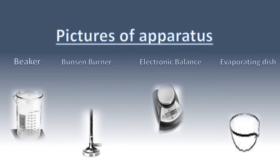Now we are going to look at pictures of the apparatus we just covered. The first one is the Beaker — you can see the picture representing it. Then we have the Bunsen burner. Then we have the electronic balance, which looks like a balance. Then we have the evaporating dish, which definitely looks like a dish.